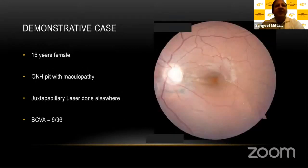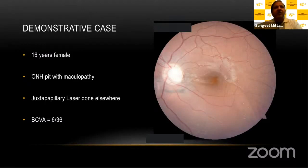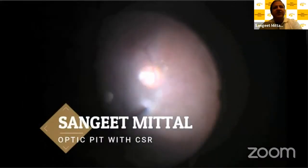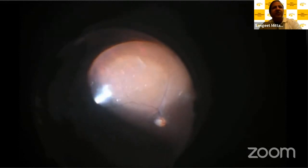This is a demonstrative case showing how we do it. This is a 16-year-old female who had an optic nerve head pit with maculopathy. You can see a massive detachment of the retina below and involving the fovea. She had undergone juxtapapillary laser done elsewhere, and her best corrected vision at this stage was 3/60. We induce the PVD using intravitreal triamcinolone, and we have to be very slow. These are very young patients and the vitreous is tightly adherent to the retina, so we have to be very slow when inducing the PVD.